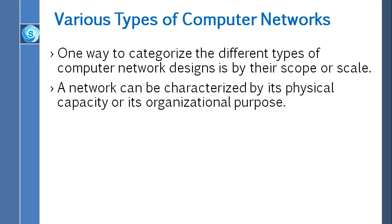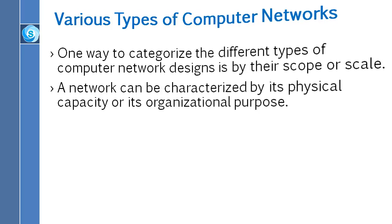One way to categorize the different types of computer network designs is by their scope or scale. A network can be characterized by its physical capacity or its organizational purpose. Use of the network, including user authorization and access rights, differ accordingly.